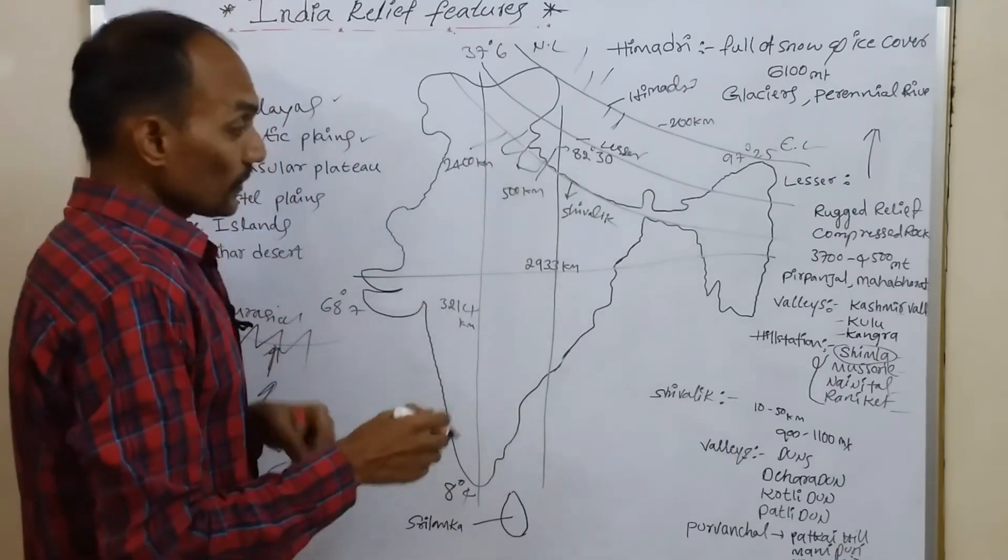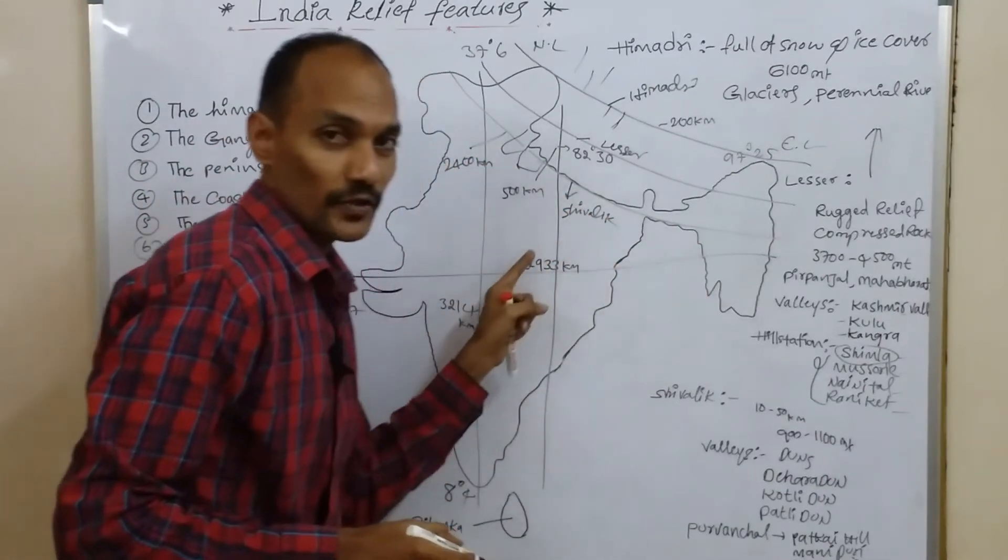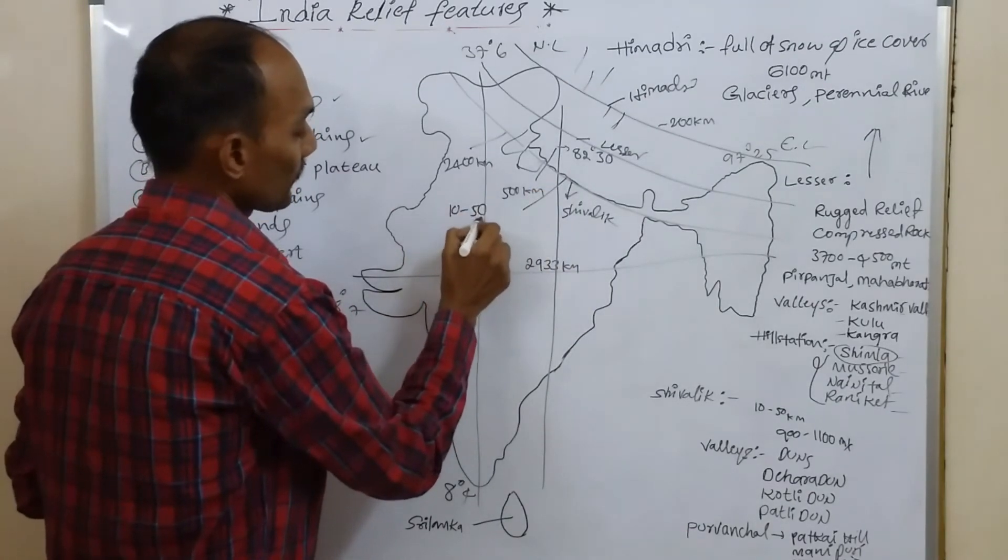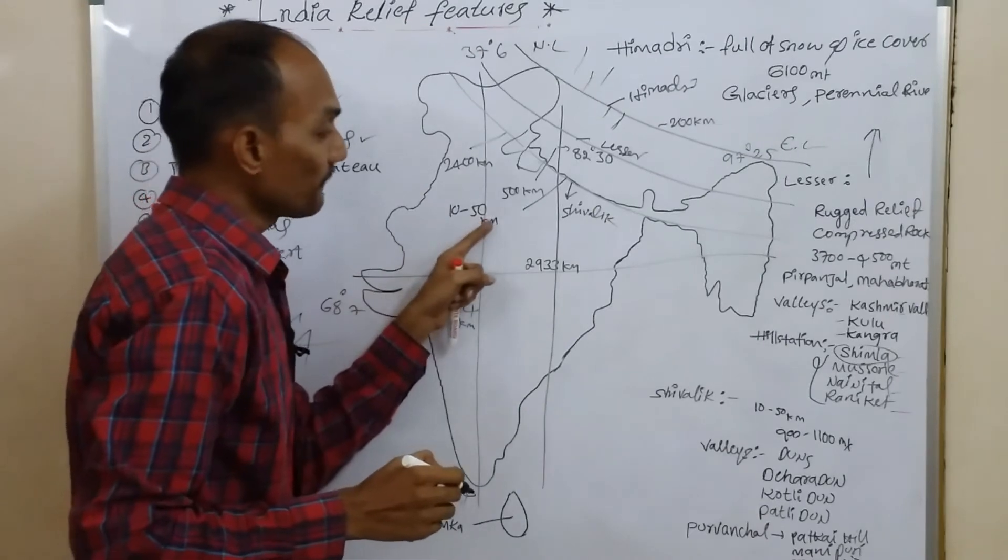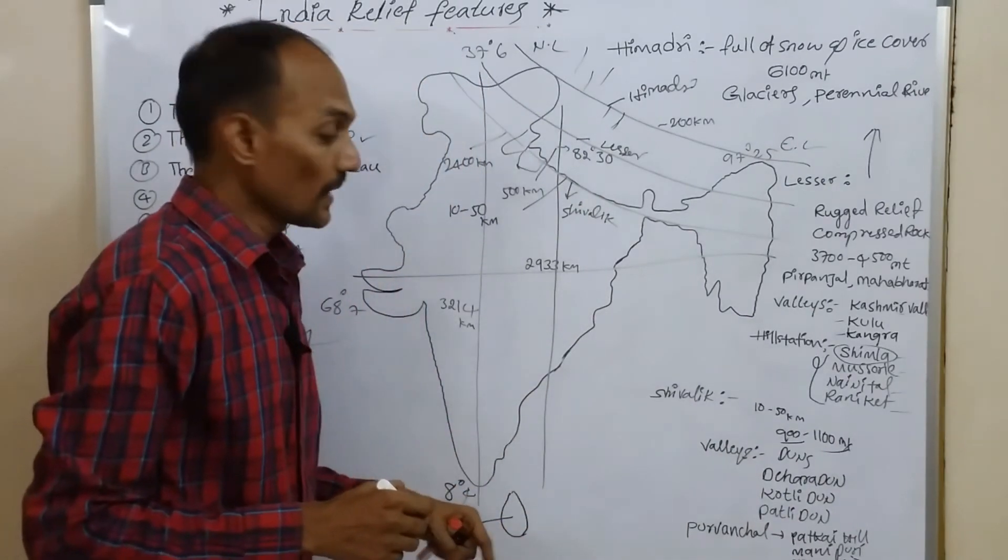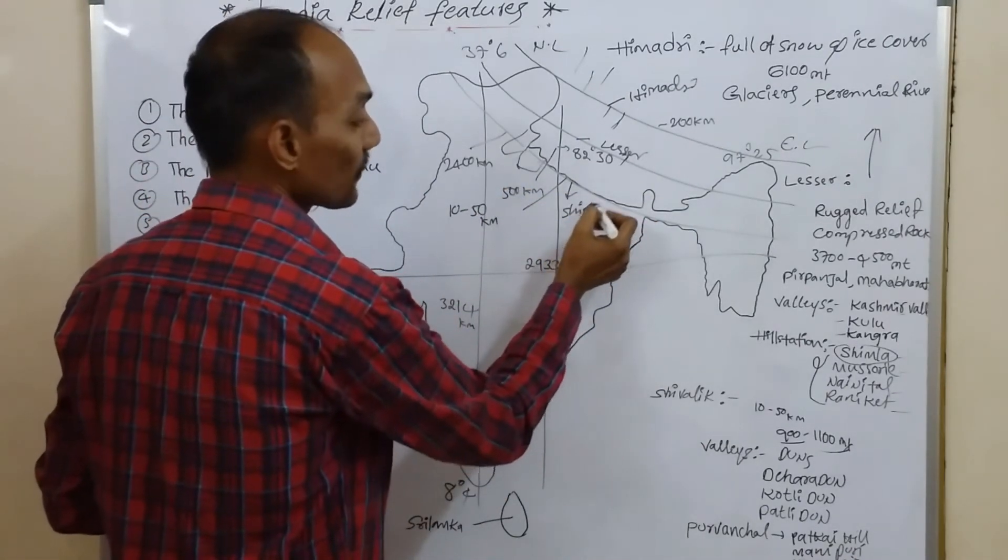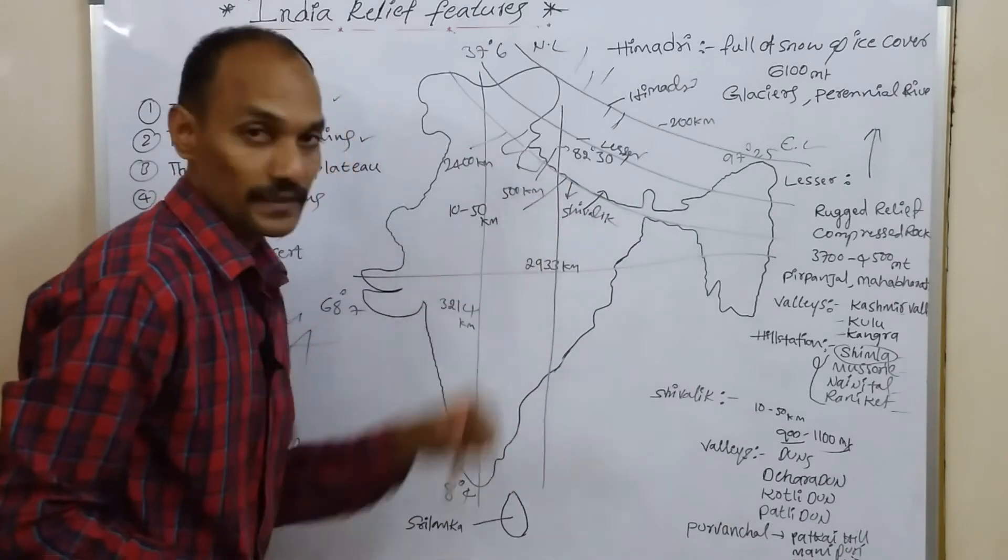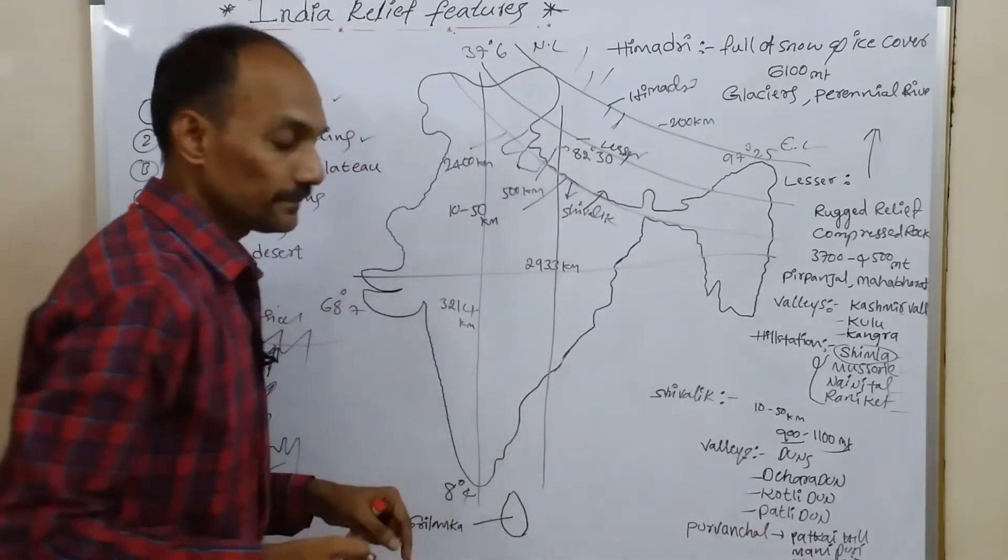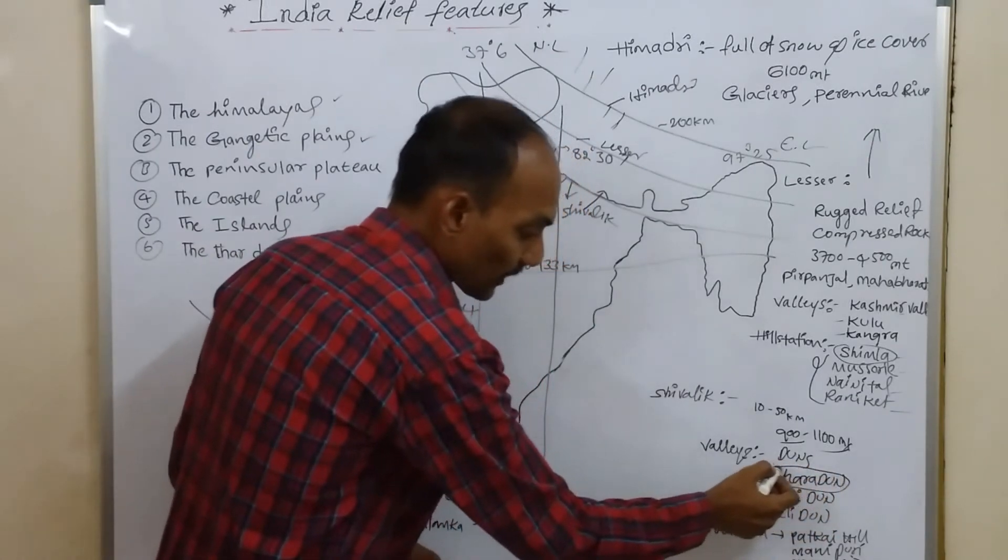Next, Shivalik. The southernmost range of the Himalayas is called Shivalik. This extent width is 10 to 15 kilometers. Shivalik's width is 10 to 15 kilometers and its elevation is 900 to 1,100 meters. We can find some valleys lying between Lesser Himalayas and Shivalik. These valleys are called Duns. For example, Dehradun, Kotli Dun and Patli Dun. Dehradun is important because it is the capital of Uttarakhand.